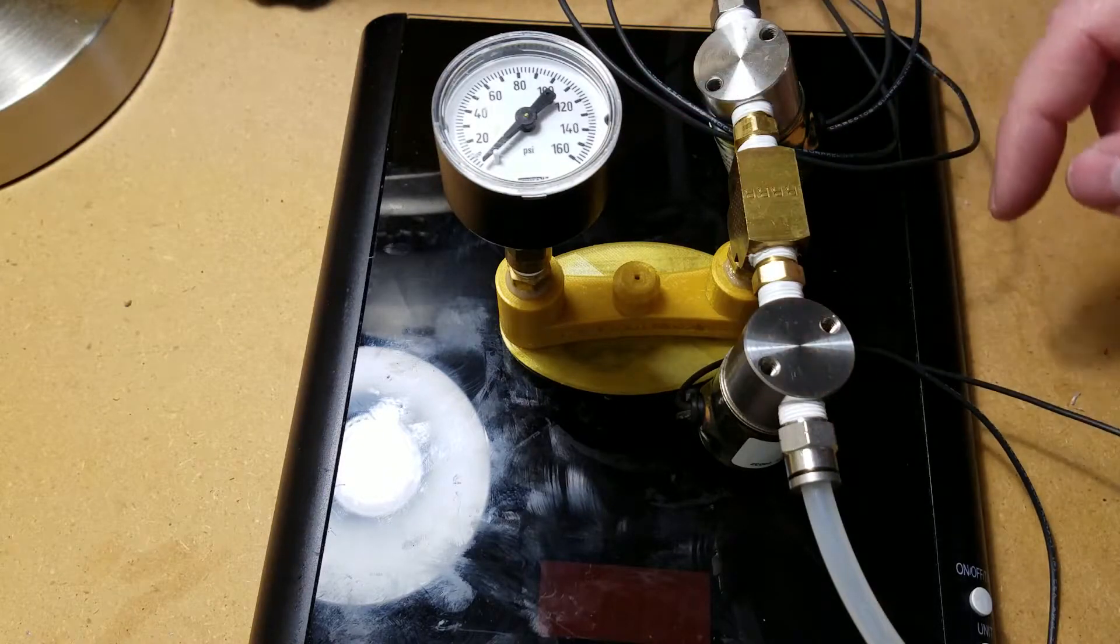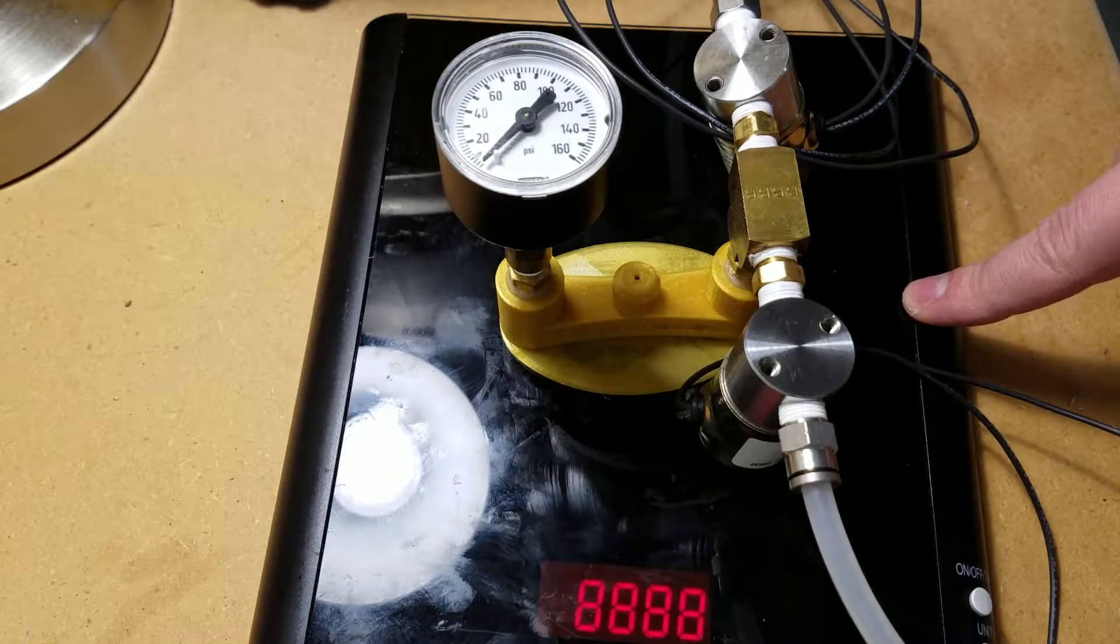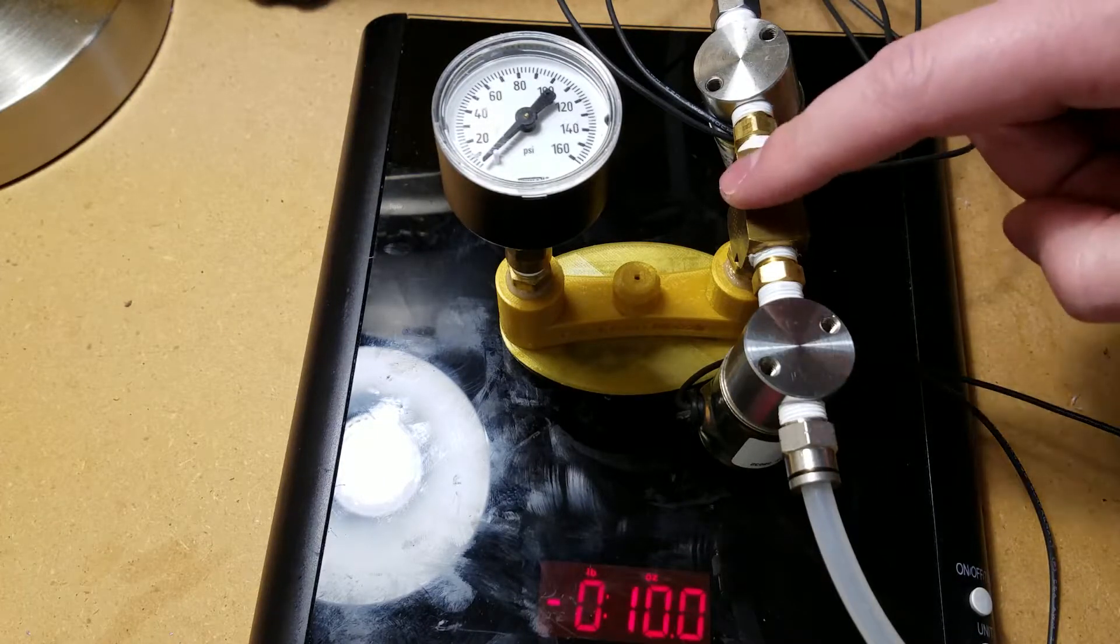Pressure gauge right there, which should tell me what the chamber pressure is. This is going to be my load cell. It will tell me how much thrust it's producing.